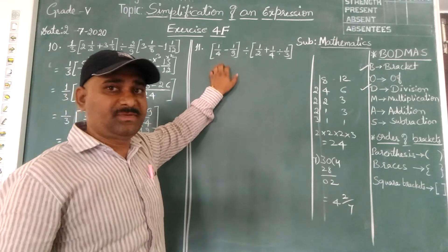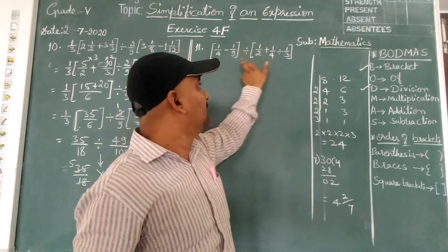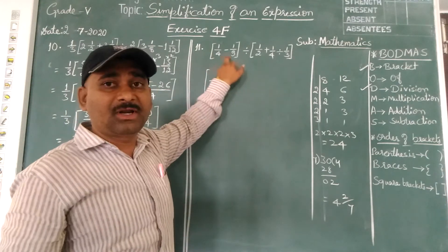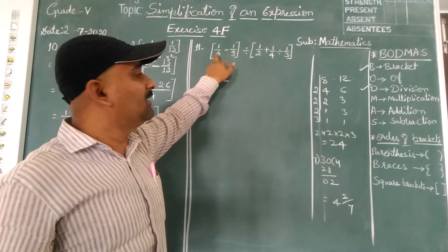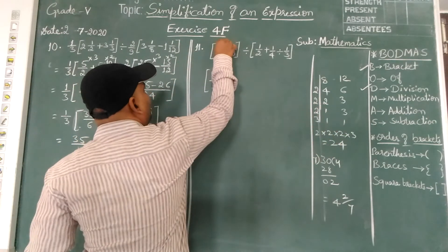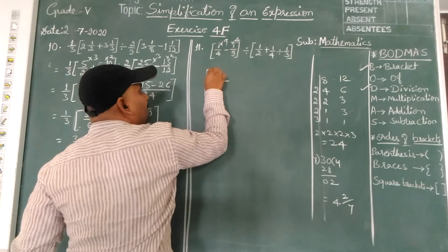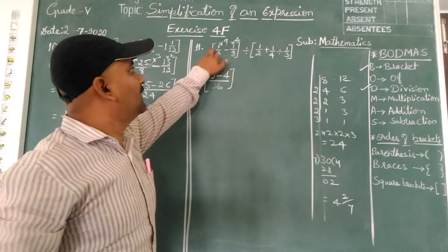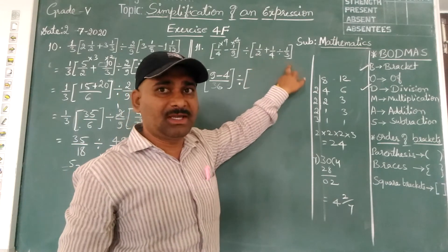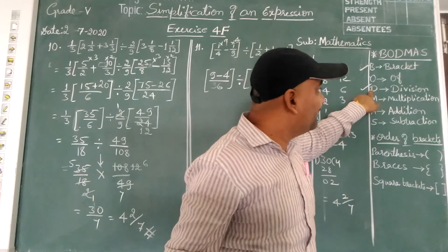Look at this next expression. Again, two brackets are given. First, we simplify both brackets, then divide. In the first bracket there is subtraction, so take the LCM of 4 and 9, which is 36. Before simplifying, note there are two operations — addition and division — so we should do division first, then addition.